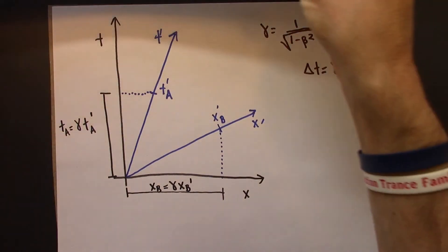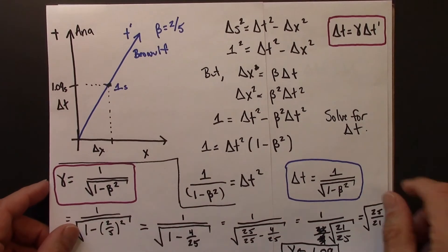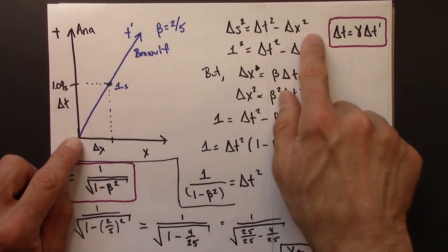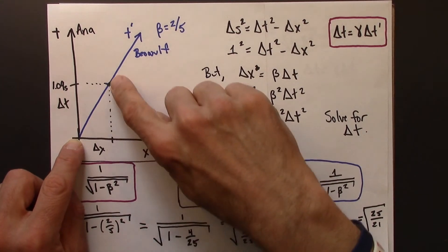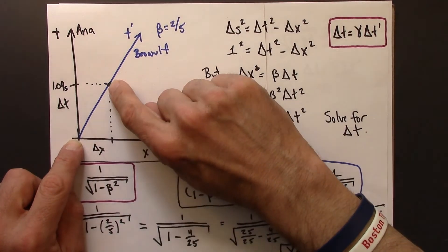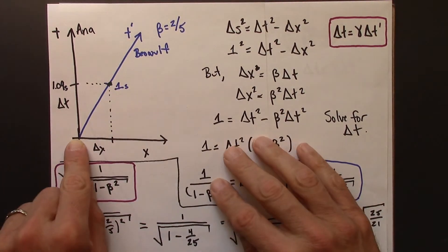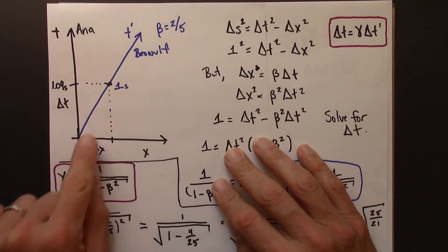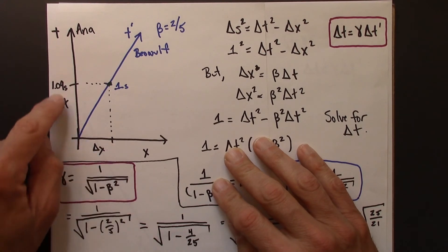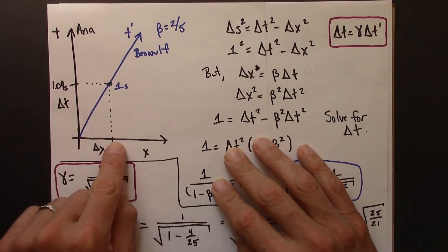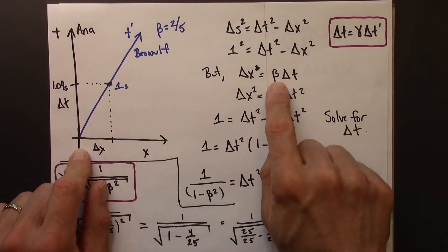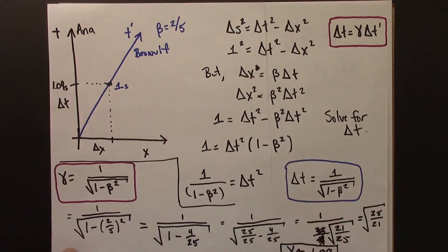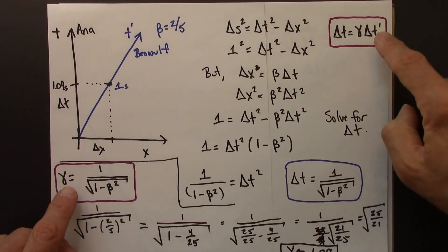And maybe, just to remind you one more time, what went on here is we said, alright, we're using the metric equation, that's often where we start with derivations. And then we said, okay, so Beowulf sees this still at his origin. We, in the at-rest frame with Anna, see that Beowulf's clock has gone a distance x in a time t, and how far x is compared to t is related to beta, the speed. And so we did that, and then just did a little bit of algebra and got to here.